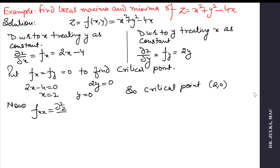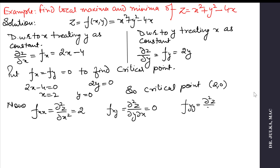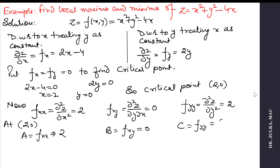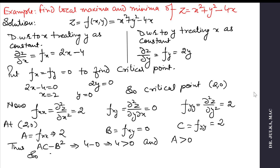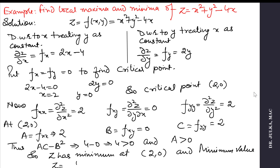Now we find the second derivatives: fxx = 2, fxy = 0, fyy = 2. At (2, 0), the values of a, b, c from the double derivatives are 2, 0, and 2 respectively. Thus, ac - b² = 4 - 0 = 4, which is positive, and a is also positive. So z has a minimum value at (2, 0). Putting x = 2 and y = 0 in the function: z = 4 + 0 - 8 = -4. So the function has minimum value -4 at (2, 0).